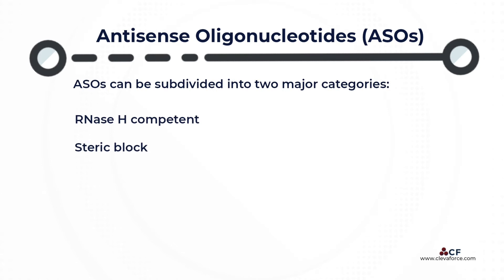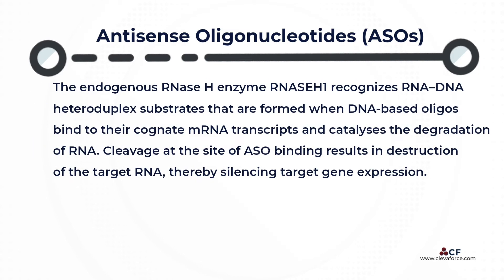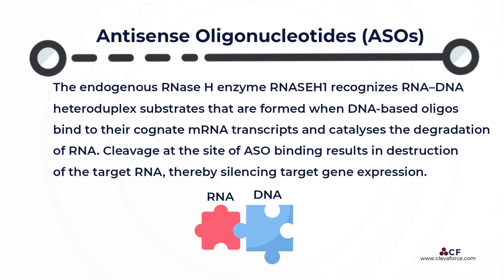ASO can be subdivided into two major categories: RNase H-competent and Steric Block. The endogenous RNase H enzyme RNase H1 recognizes RNA-DNA heteroduplex substrates that are formed when DNA-based oligonucleotides bind to their cognate mRNA transcripts and catalyzes the degradation of RNA.